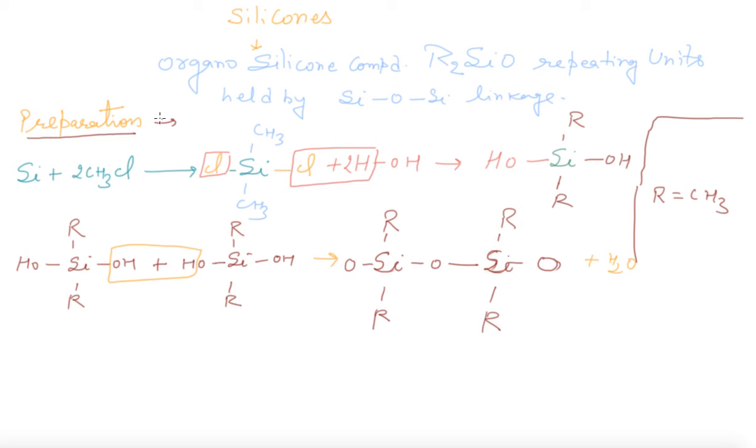How can we prepare it? For the preparation, silicon reacts with chloromethane. Silicon valence is 4, you know that. Two methyl groups and two chlorine attached. It will react with water and release HCl, and we are getting silicon compounds.